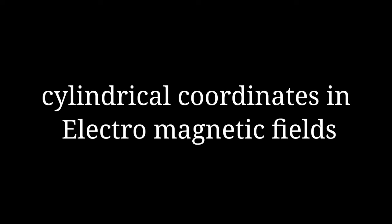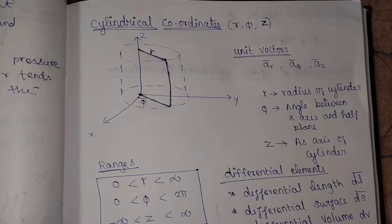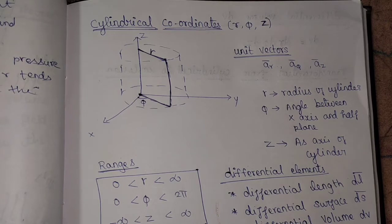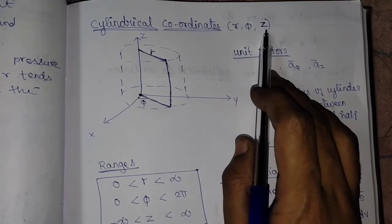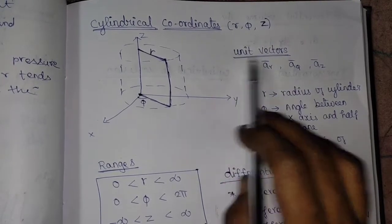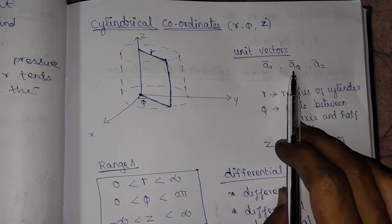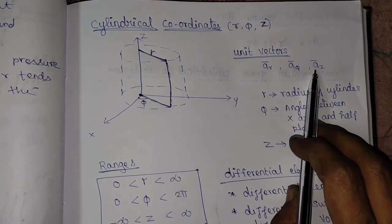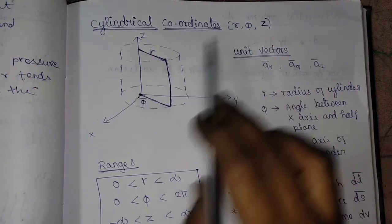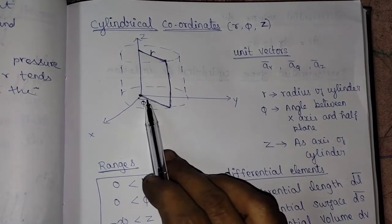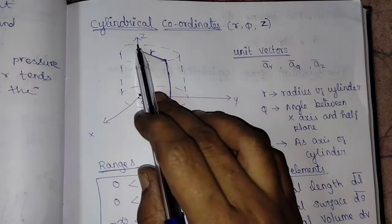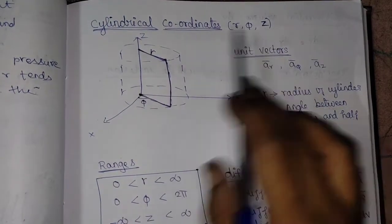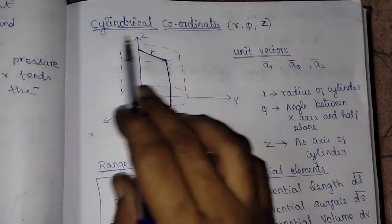Welcome back to QVTUSHian Academy. In today's class I am going to teach you cylindrical coordinate systems in field theory. The cylindrical coordinate system variables are R, phi, and Z. The unit vectors are AR vector, Aphi vector, and AZ vector, where R is the radius of the cylinder, phi is the angle between the X-axis and the half plane, and Z is the axis of the cylinder.